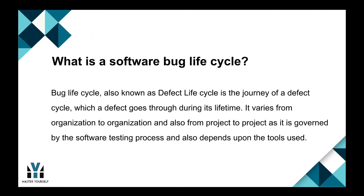What is a software bug lifecycle? Bug lifecycle, also known as defect lifecycle, is the journey of a defect cycle which a defect goes through during its lifetime. It varies from organization to organization and also from project to project, as it is governed by the software testing process and also depends upon the tools used.